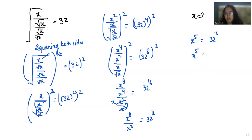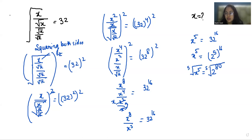x to the power 5 equals 32, and we can write 32 as 2 to the power 5. So x to the power 5 equals 2 to the power 5, raised to the power 16, which equals 2 to the power 80. Now I am going to take the 5th root of both sides. With the help of this, x equals 2 to the power 80 times 1 by 5, so x equals 2 to the power 16.